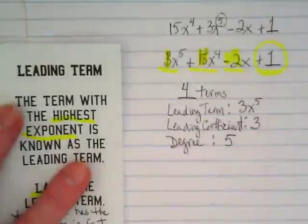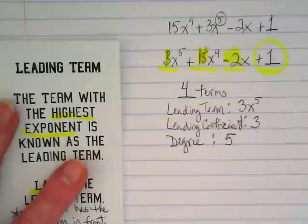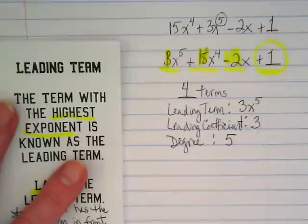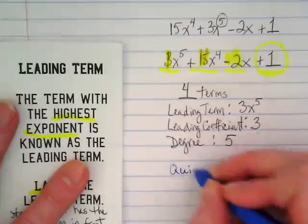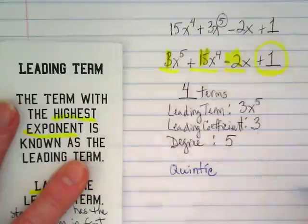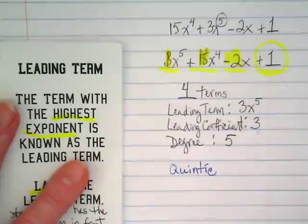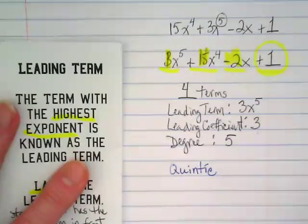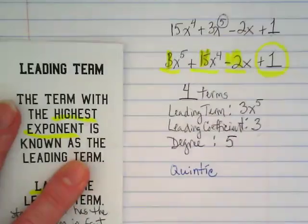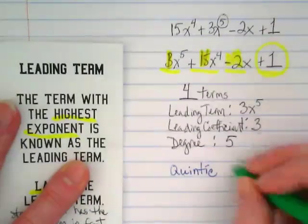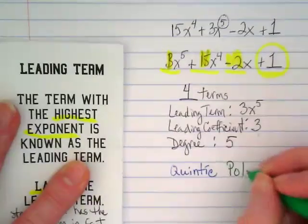So now we can name this. You guys made that list. What is the term for the first part of the name when we have a power of 5? Quintic. And what do we call this if there's more than three terms? So the second part of its name, you can think of it as a first and last name, is Quintic polynomial.